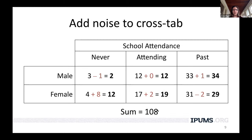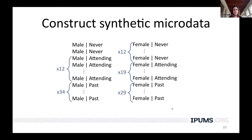The noise introduced is independent of the original value of the cell. So you might get a relatively small cell that gets a fairly large noise value introduced. In this example, we had four females who had never attended school, and adding a noise value of plus eight means it now looks as though we had 12 females who had never attended school. The sum of noisy values may exceed the original population count. We could introduce post-processing constraints to hold the total population constant, and the Bureau has chosen to implement some invariants to keep certain things constant.